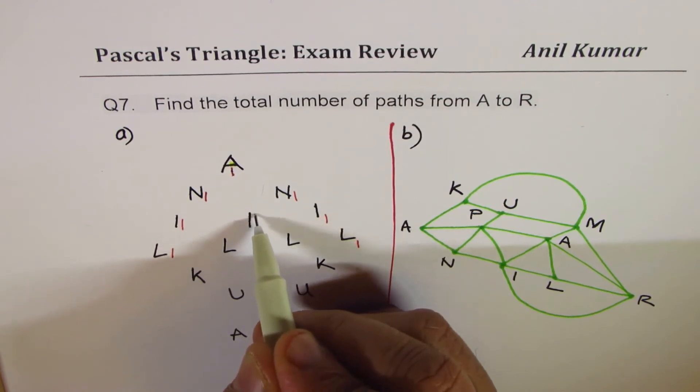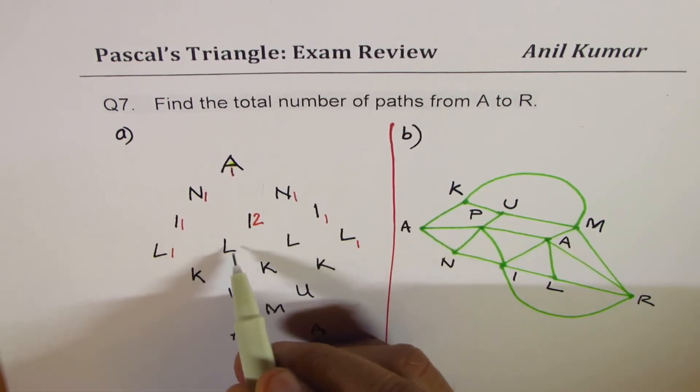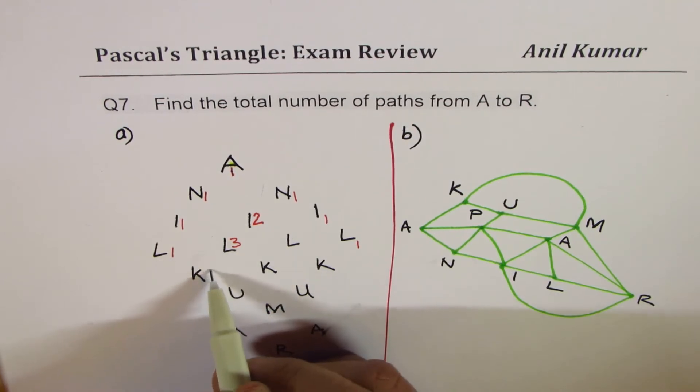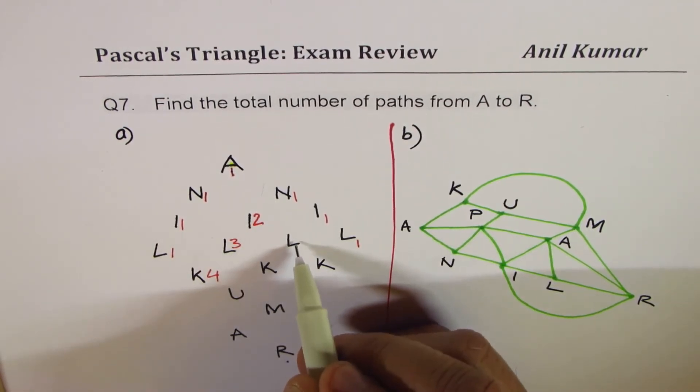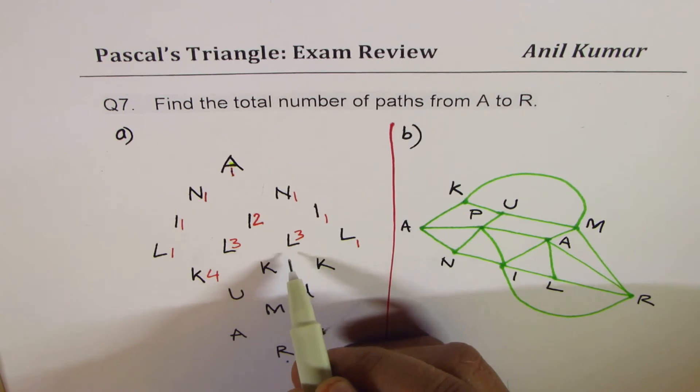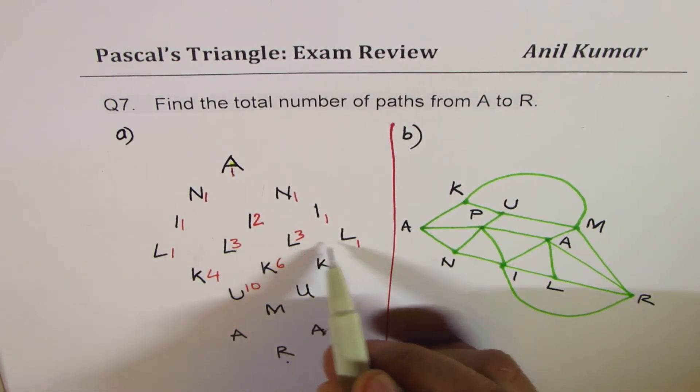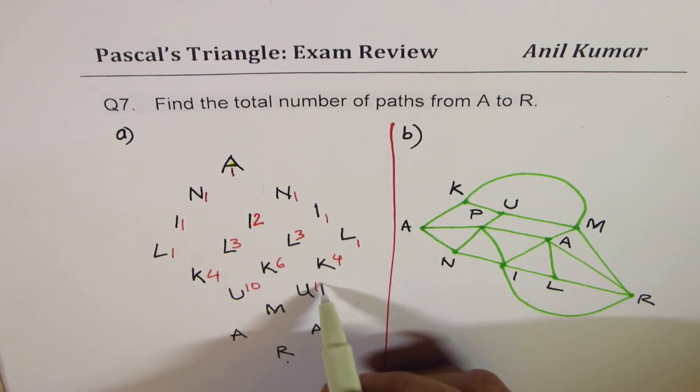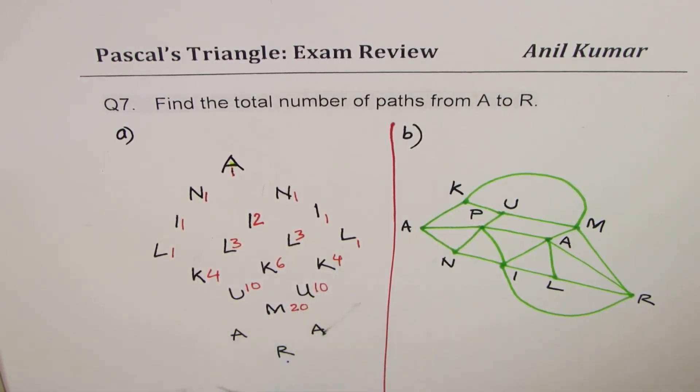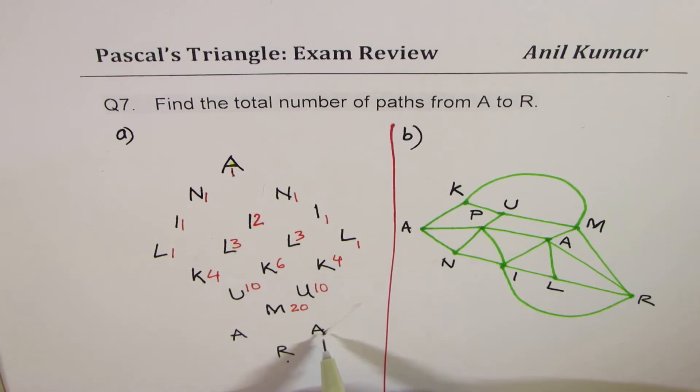So here to come to this I, we'll add 1 and 1. So we'll get 2 here. Here we'll get 2 plus 1, which is 3. And 3 plus 1 is 4. Now for this position, 2 plus 1 is 3. For this position, 3 plus 3 is 6. 6 plus 4 is 10 here. 1 plus 3 is 4. 4 plus 6 is 10. 10 plus 10 is 20.